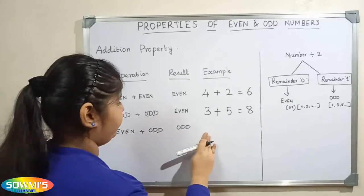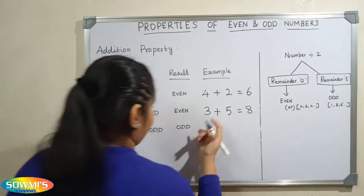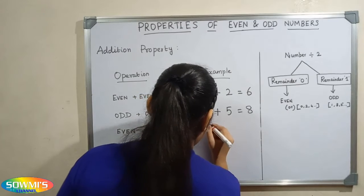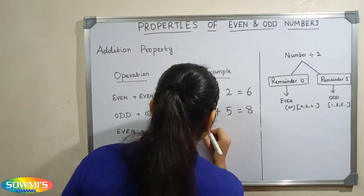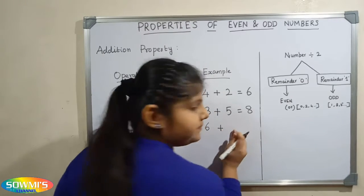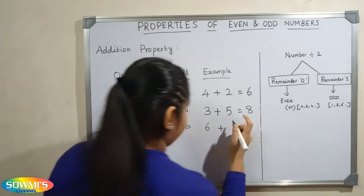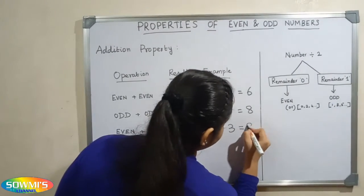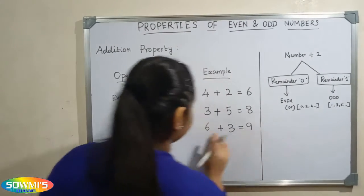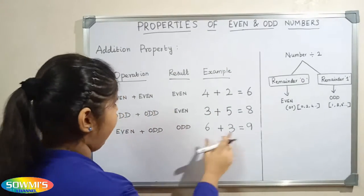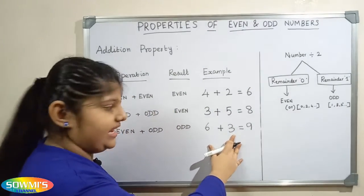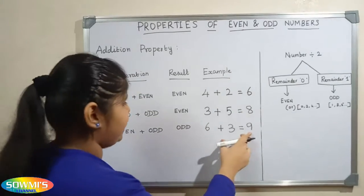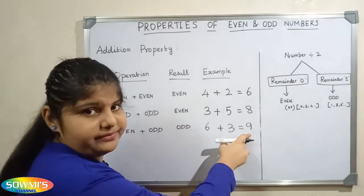When we add an even number and an odd number, we will get the result as an odd number. For example, 6 plus 3 is equal to 9. Here 6 is the even number and 3 is the odd number. When we add 6 and 3 we get 9, which is an odd number.